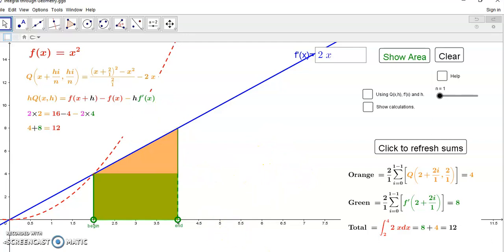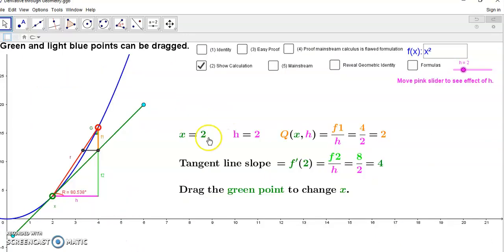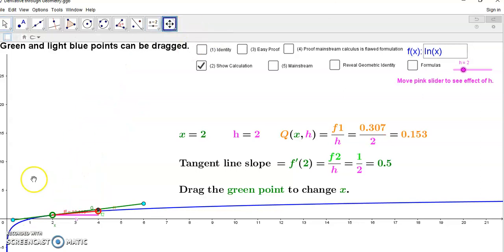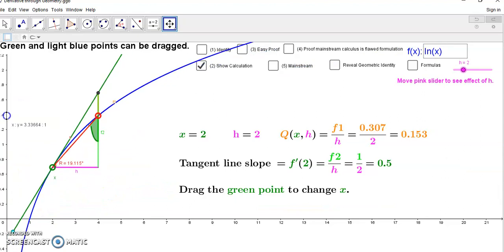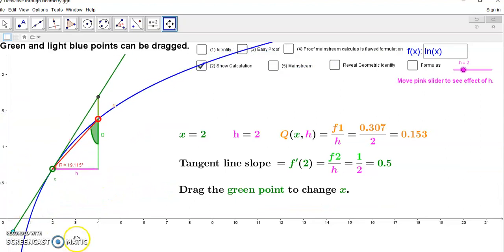Shall we do another function? How about a logarithm? Let's do log of x, because it works with everything actually. The geometric theorem you only need to prove once and you have the result forever. We know that we'll have a derivative of 1/2 here because we're looking at x=2.